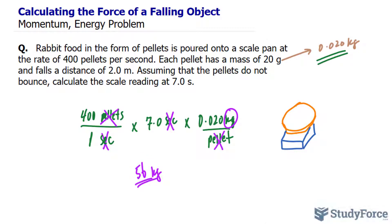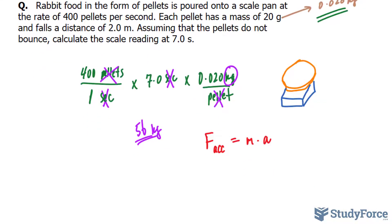Now remember how to calculate force. Force due to the accumulation of pellets on this scale, I'll represent as force ACC for accumulation, is equal to the mass times acceleration. And remember, acceleration will be the acceleration due to gravity.